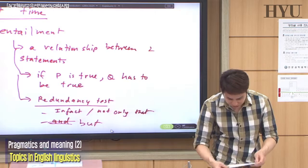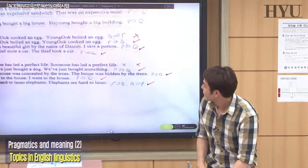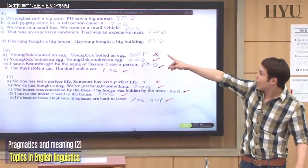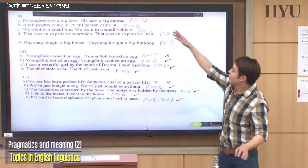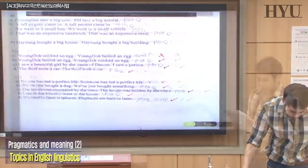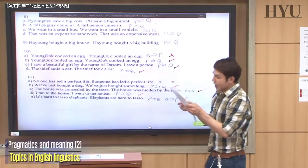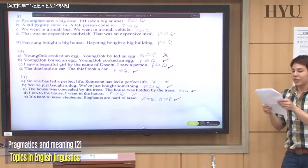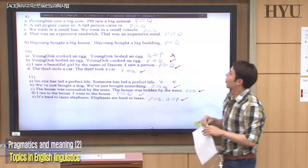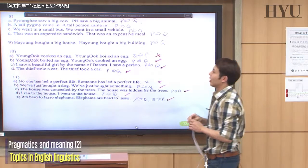We'll continue with the practice questions from last time and then move on to the next type of meaning. So this is from last time — we stopped at number eight. 'Pyonghee saw a big cow' and 'Pyonghee saw a big animal.' Does the first one entail the second one or not?